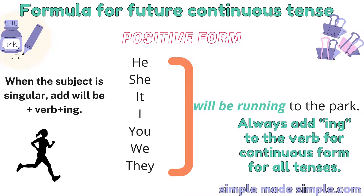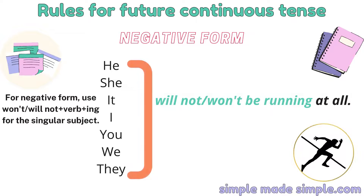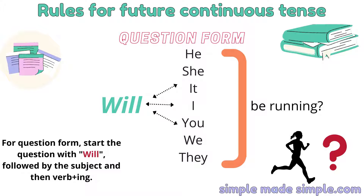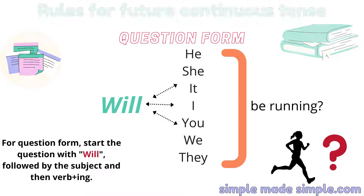For example: 'He will be running' or 'They will be running.' To form a negative sentence, add 'will not': 'He will not be running' or 'They will not be running.' To form a question, start your sentence with 'will': 'Will he be running?' or 'Will they be running?'